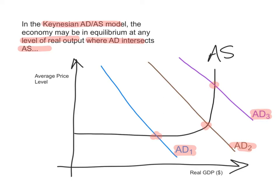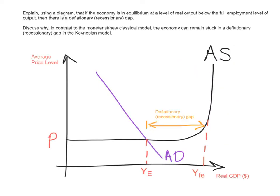Remember, Keynesians don't really distinguish much between the short run and the long run. The Keynesian ADAS model depends mainly on the existence of spare capacity in the economy. The vertical section of the Keynesian aggregate supply curve is at a level where output is at full employment — this is the full employment level of output, YFE.